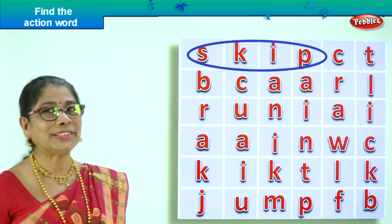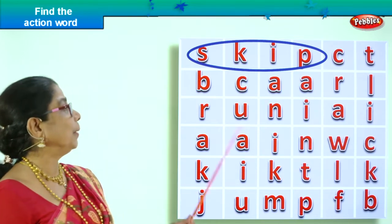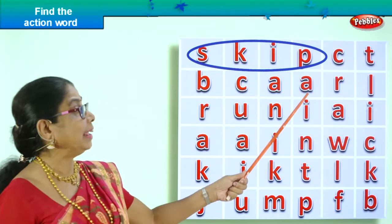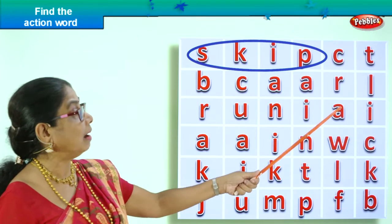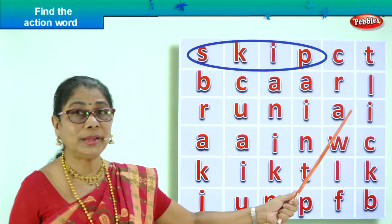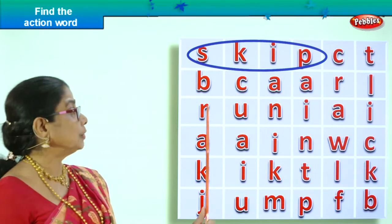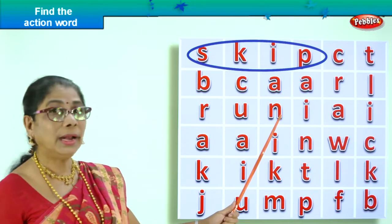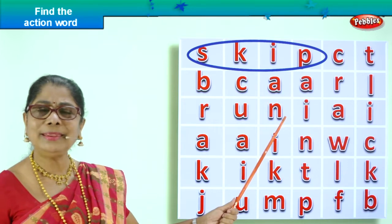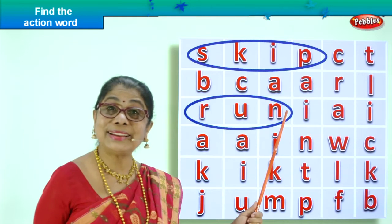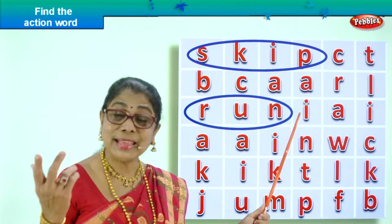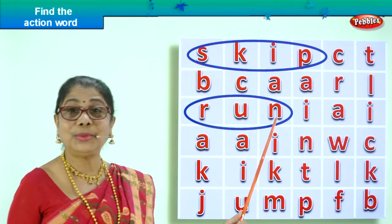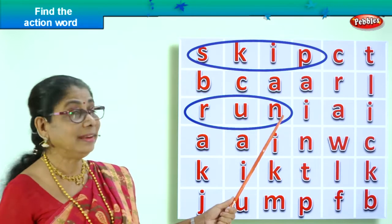So we found one action word. Let's go on. B-C-A-A-R — any action word? Next row. R-U-N. What is that? Run. Is run an action word? Yes, so we circle that. R-U-N, run.